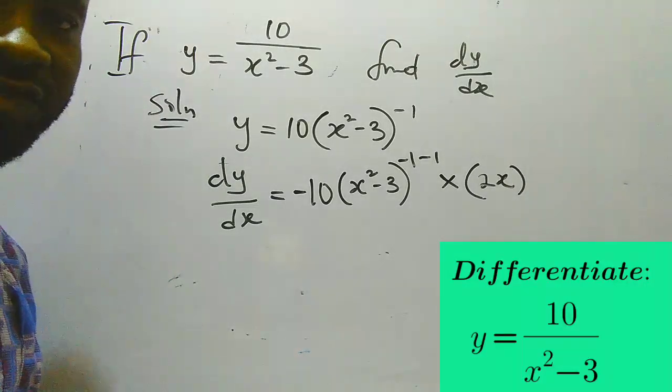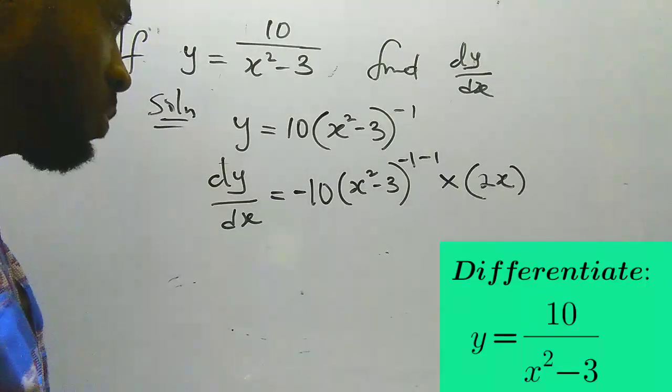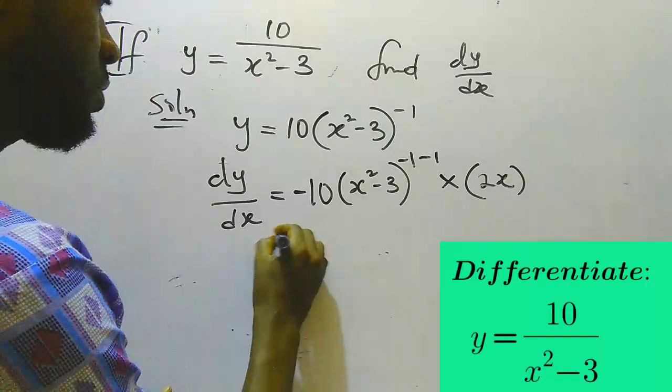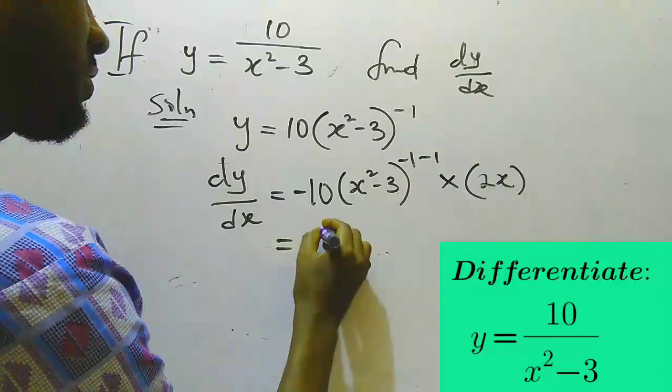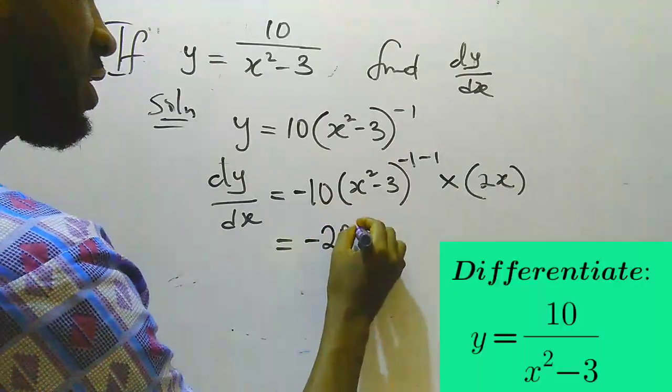Then the next thing to do is just to tidy up our work. So let's go now. Minus 10 times 2x will give us minus 20x.